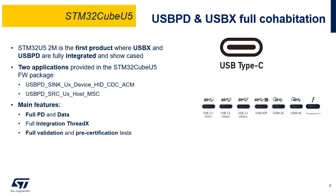The USB Type-C connector enables traditional USB communication between the host and peripheral concurrently with the power delivery protocol. The STM32U5 embeds both a power delivery interface and a host-device USB 2.0 interface. The STM32Cube U5 is the first firmware package in which USB-X and USB-PD are fully integrated.